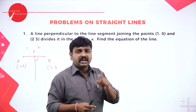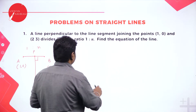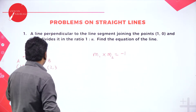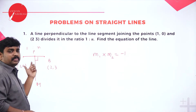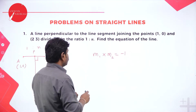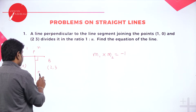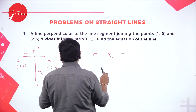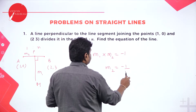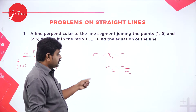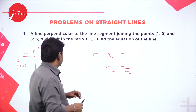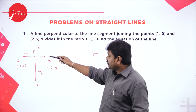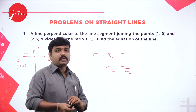If two lines are perpendicular, then M1 into M2 equals minus 1. Suppose I want a line called PM, and AB and PM are perpendicular. If the slope of AB is M1 and the slope of PM is M2, then M1 into M2 equals minus 1. So M2 is minus 1 by M1 — the slope of one line is the negative reciprocal of the other.